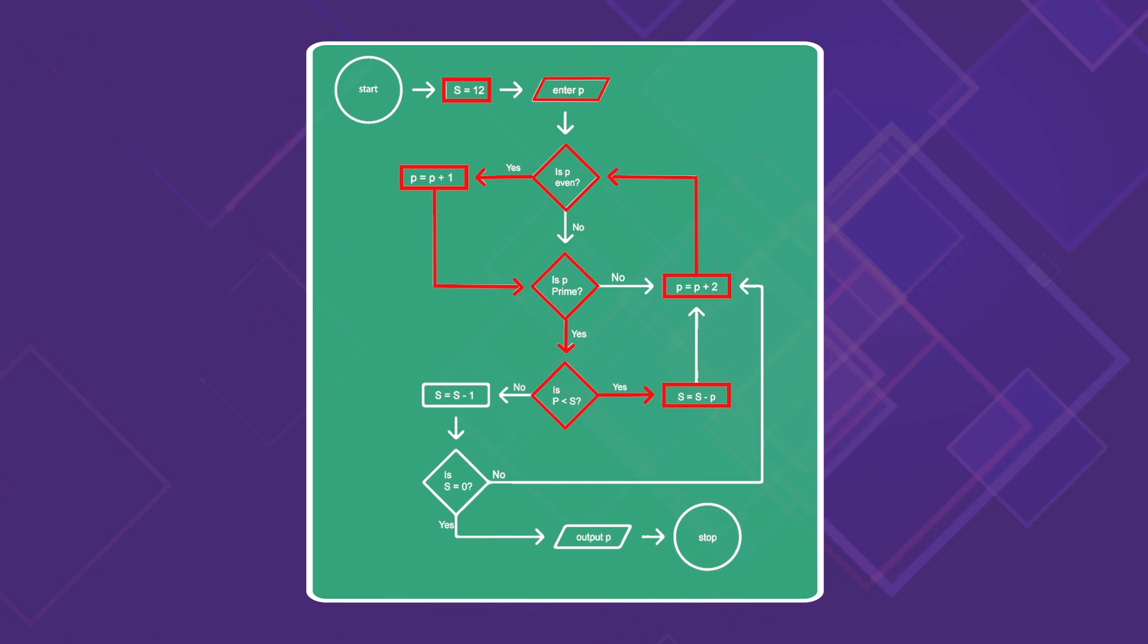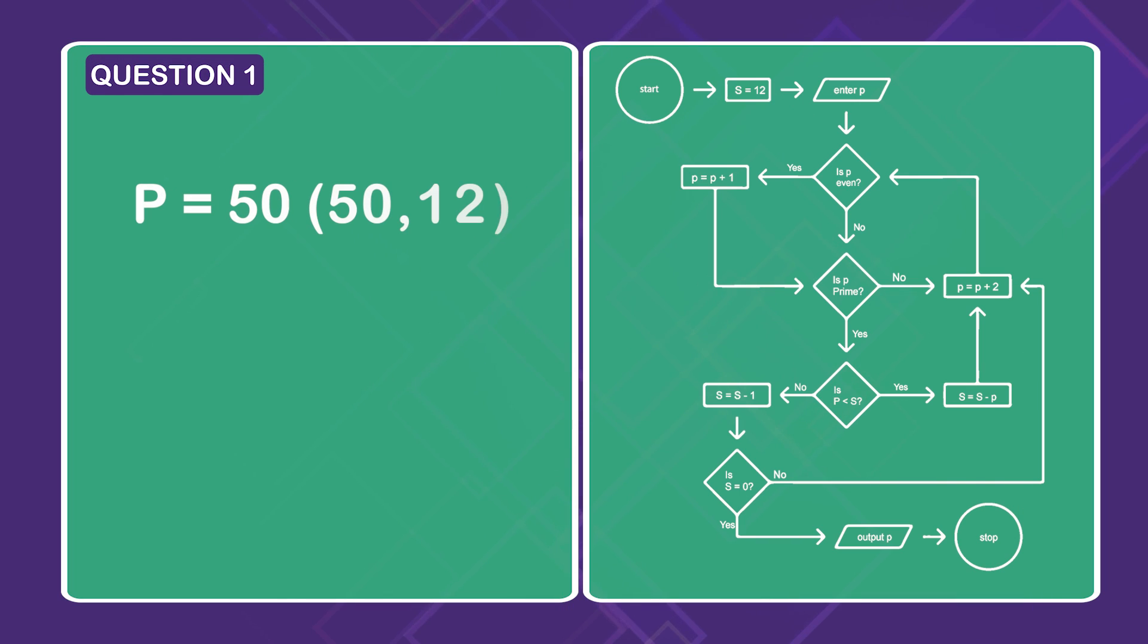Now onto question 1. I will use ordered pairs of the form p, s to discuss this. I recommend ordered pairs or triplets for keeping track of how numbers change as we move through the steps. Enter p equals 50. So at that point we are at (50, 12).